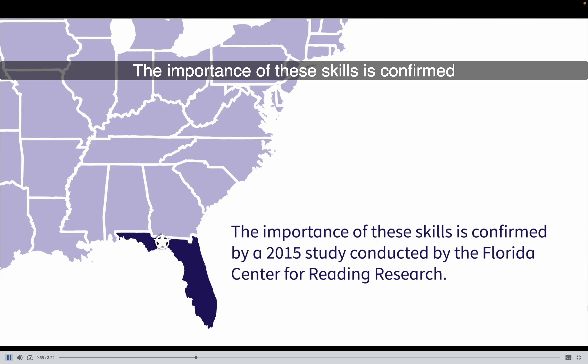The importance of these skills is confirmed by a 2015 study conducted by the Florida Center for Reading Research. It showed that vocabulary and syntactic knowledge can predict students' overall reading comprehension. Because of its impact on comprehension and school achievement, instruction in academic language is essential for struggling readers and English language learners, as well as beneficial for all students.